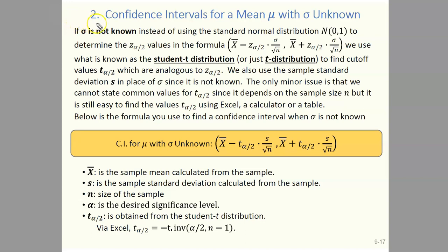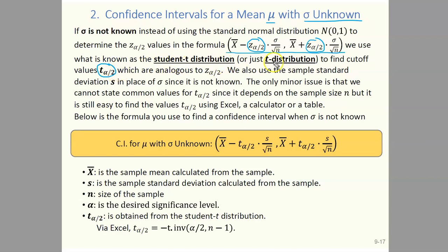Hi everyone. In this lesson we're going to construct confidence intervals for a mean mu when the population standard deviation sigma is unknown. Now recall that if sigma is known we use a specific formula for our confidence interval. When sigma is unknown, what we use in place of the z alpha over 2 values is what's known as the t alpha over 2 values, obtained from the student t distribution rather than the standard normal distribution.